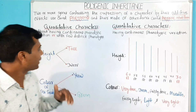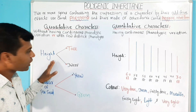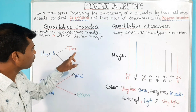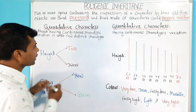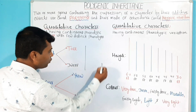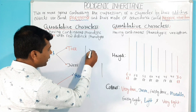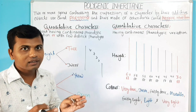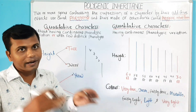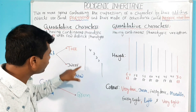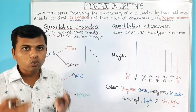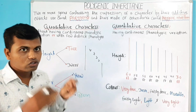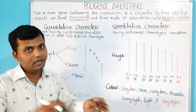We will explain this by taking the character Height. Here, Height is a character which has two contrasting forms: Tall and Dwarf. In between Tall and Dwarf, there is no any other form of height present. Being there is no other form of height present between Tall and Dwarf, Height shows two phenotypes — Tall and Dwarf. So, Height is a qualitative character.